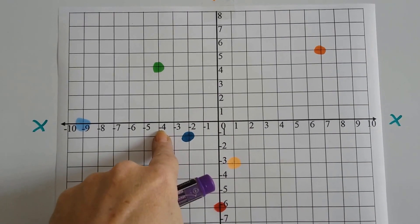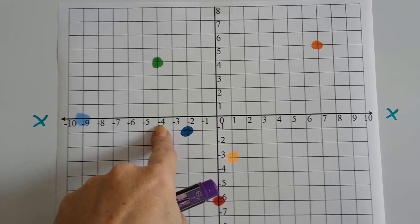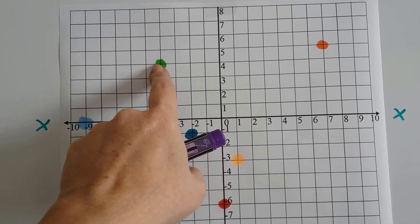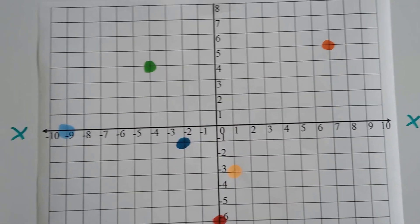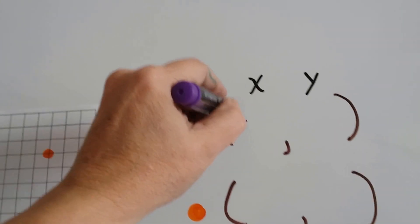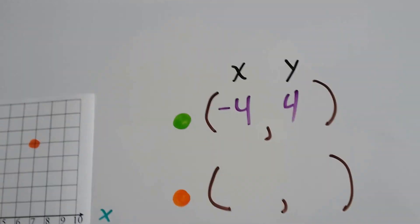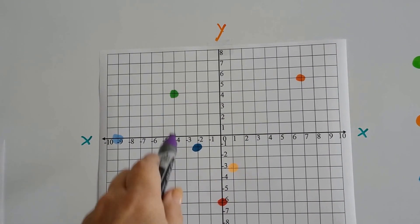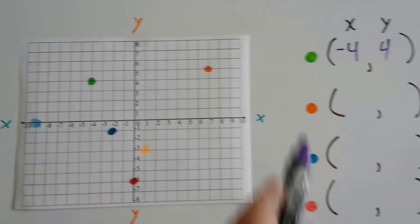But look, this is a negative 4. See that? For the x, it's at negative 4. And for y, it's at positive 4. So this would be a negative 4 first and then a positive 4. It's at negative 4 and then positive 4 for the y.